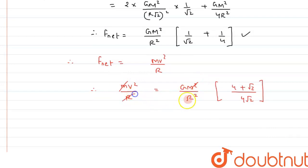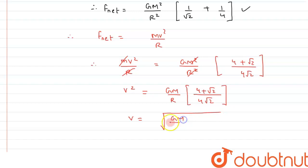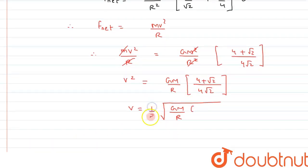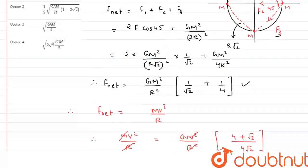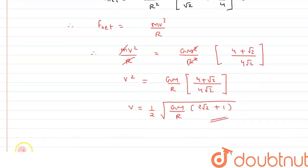Comparing, mv²/r = GM²/r² × (4 + √2)/(4√2). One m and one r cancel, giving v² = GM/r × (4 + √2)/(4√2). Taking the square root, and simplifying — 1/2 can be taken out of the root — we get v = (1/2)√(GM/r) × √(2√2 + 1). Comparing with the options, option B is the correct answer. I hope you have understood the concept. Thank you for watching.